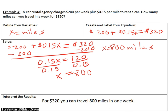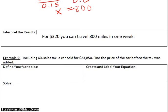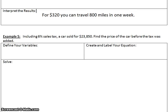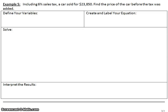We scroll down here. This is the last problem of the day. Example 5. With example 5, it says including 6% sales tax, a car sold for $23,850. Find the price of the car before the tax was added. This problem I want you to try on your own and bring it to class, and then we can discuss it. Thank you.